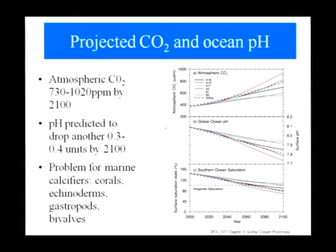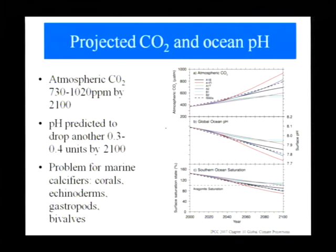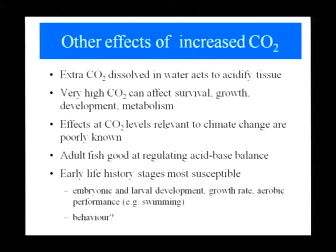Looking at the projections for where we're headed, atmospheric CO2 is predicted to be somewhere in the range of 730 to 1,200 ppm by 2100 on the A2 scenario — effectively a business-as-usual scenario from the IPCC — and that would cause ocean pH to decline another 0.3 to 0.4 units. This is obviously a major problem for marine calcifiers such as corals, echinoderms, gastropods and some bivalves, because aragonite would become under-saturated in the ocean somewhere around the middle of the century.